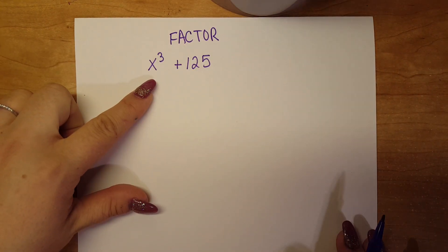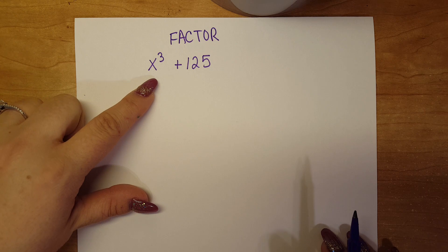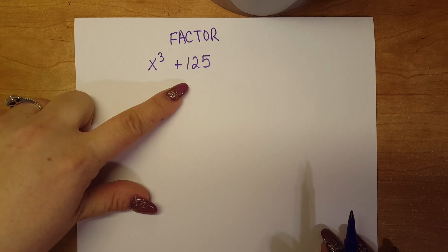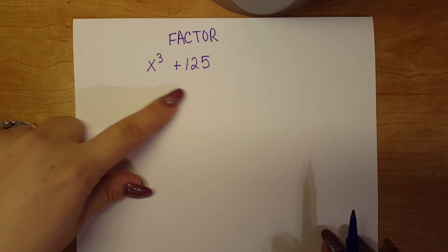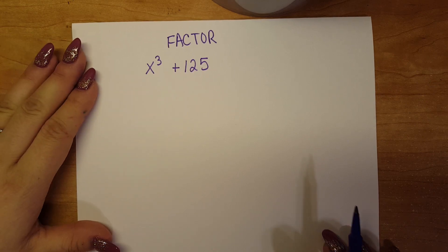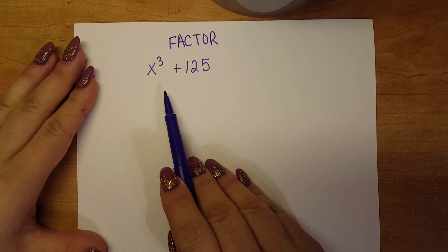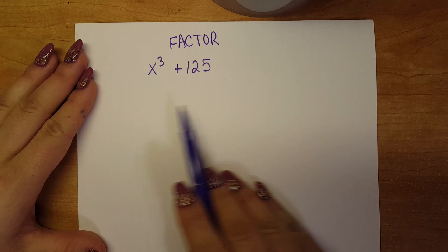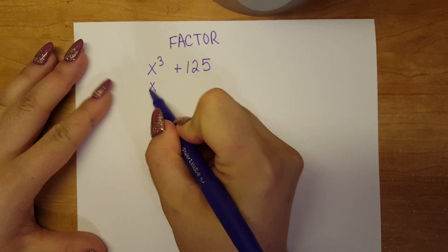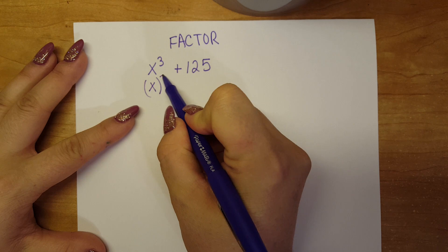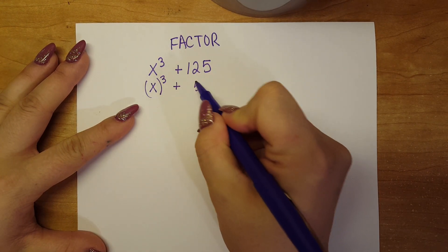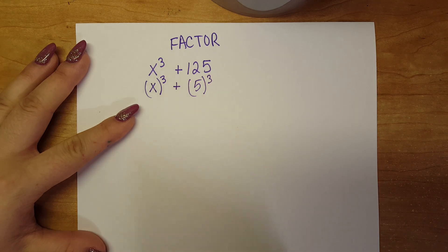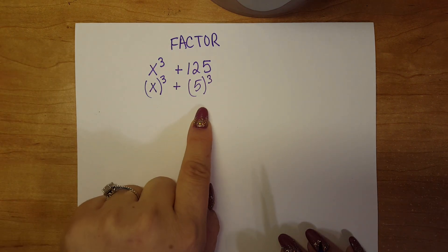In this example we're going to practice factoring x cubed plus 125. We notice that we have an x cubed and 125 can be rewritten, so we're going to factor this as a sum of cubes. We're going to go ahead and write the x and put parentheses around it, so this is the same thing as saying x cubed plus 5 cubed because 5 cubed is 125.